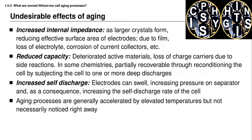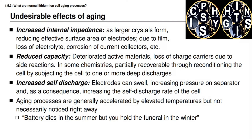Any one of the aging processes is usually accelerated by higher temperatures, and the resulting aging is not necessarily noticed right away. There's a rule of thumb that says batteries die in the summer but you hold the funeral in the winter. The aging mechanism was probably accelerated by hot summer temperatures, but hot temperatures also result in lower cell resistance. Cell resistances are lower at warm temperatures and higher at cold temperatures, so even though effective resistance is increasing due to aging, you don't notice it until winter, when cold temperatures cause the overall resistance to rise and you realize the cell has actually failed.